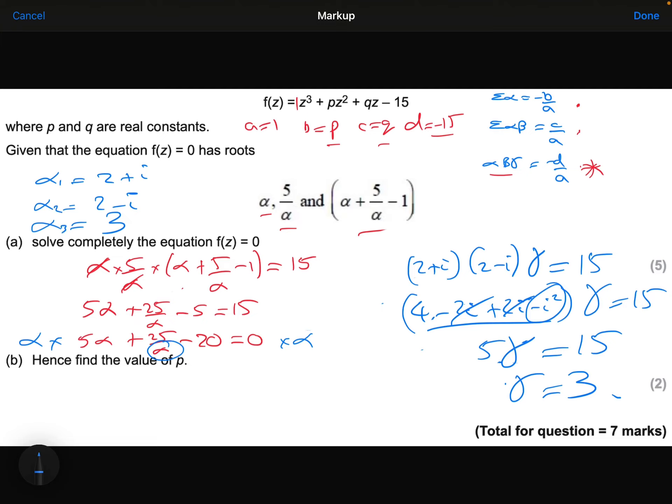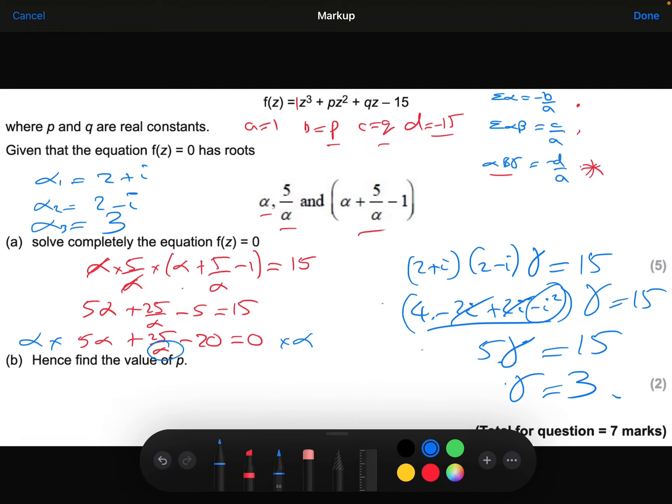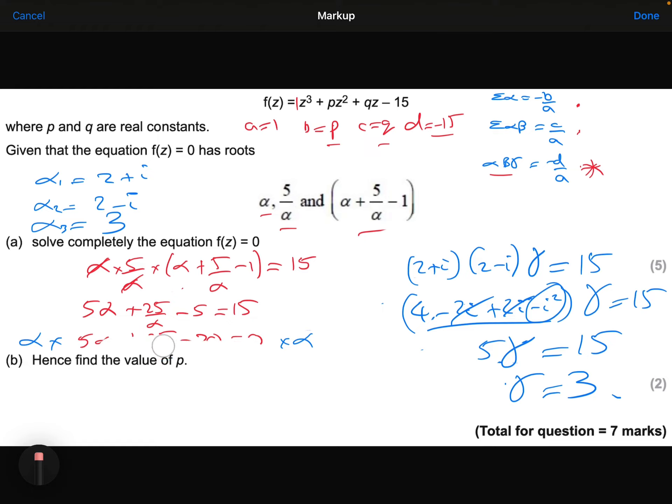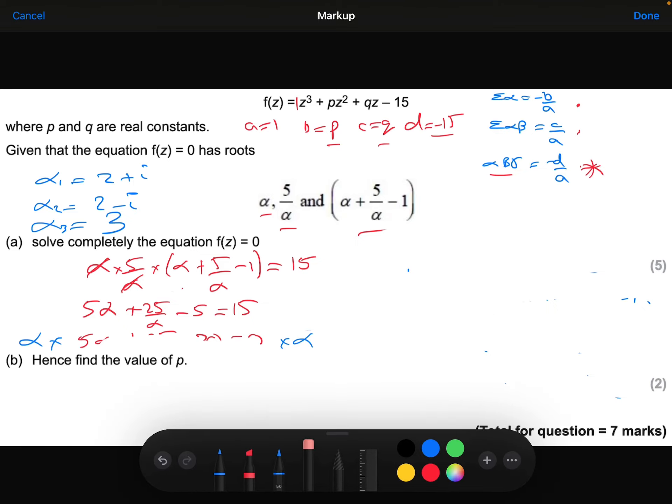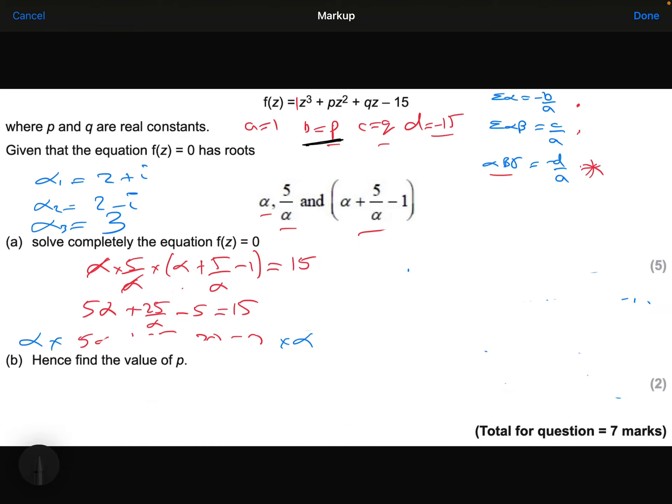Part B, we want to find the value of P. So let's come back up to where we had P, which is up here. P is the b, which appears in my equation, which is the sum of the three roots. So I know if I add my three roots together, so 2 plus i plus 2 minus i plus 3, will equal minus b over a. So b is P. A is just the 1, so I don't actually need that 1 there.